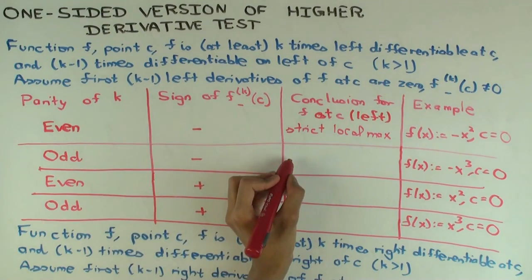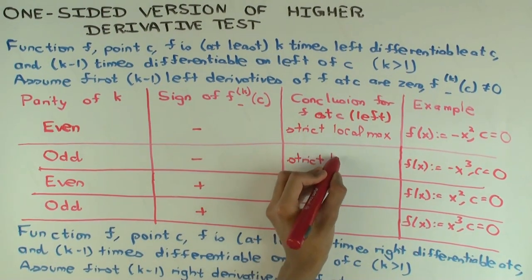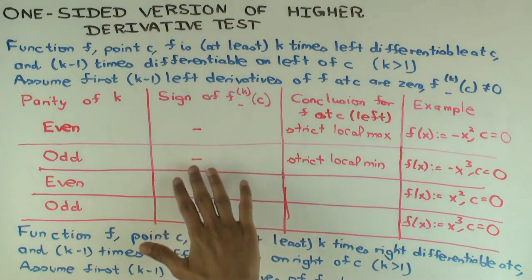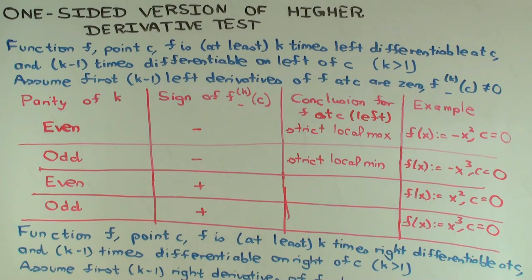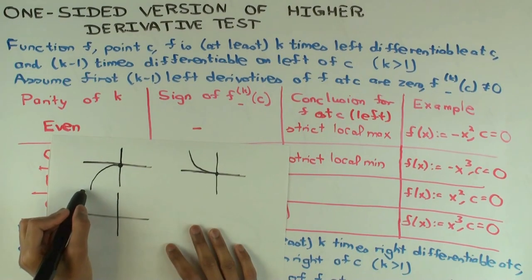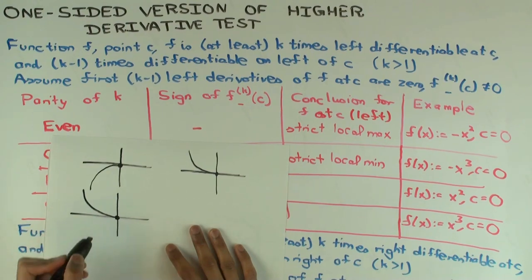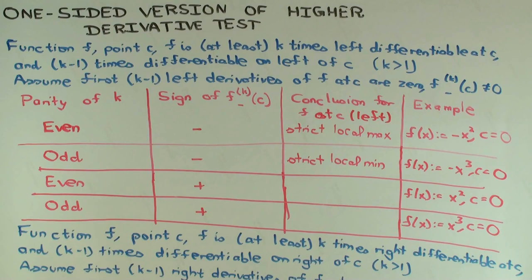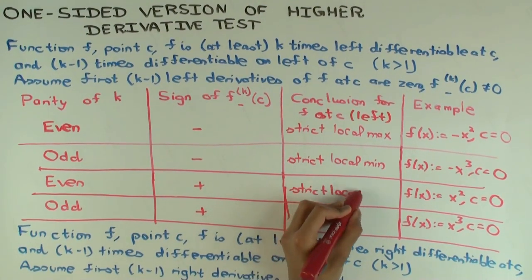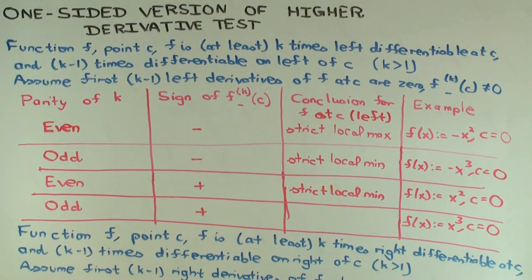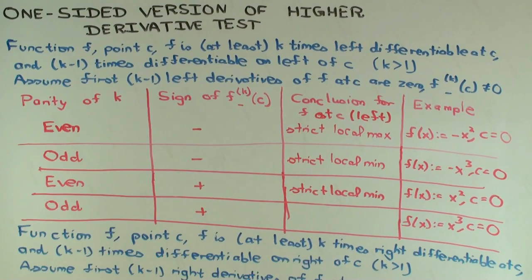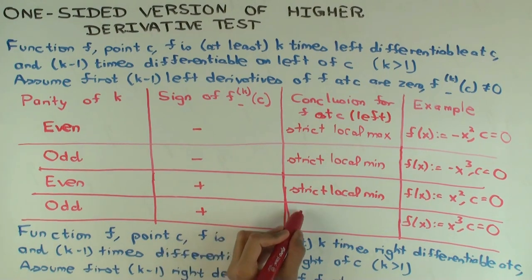For negative x-cubed, how many times do you differentiate to get a non-zero value? Three times — and the value is negative. Even and positive: remember we are doing things on the left side. An example is x-squared at 0. On the immediate left it's decreasing and concave up, so you get a strict local minimum. And odd and positive is like x-cubed — you get a strict local maximum.